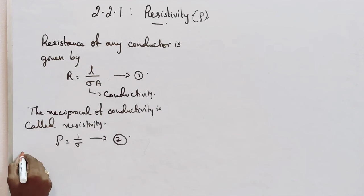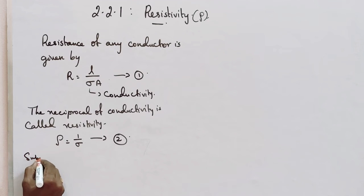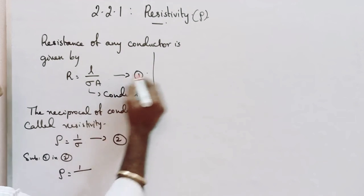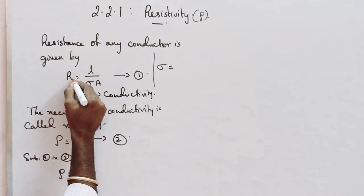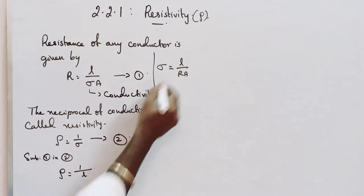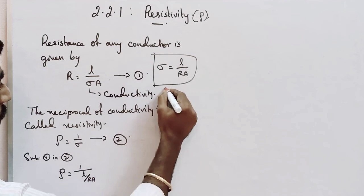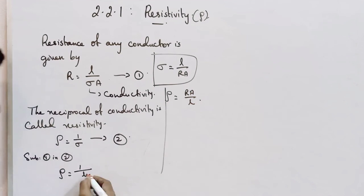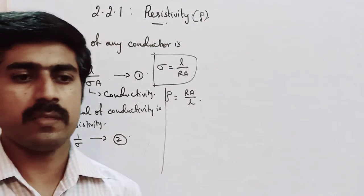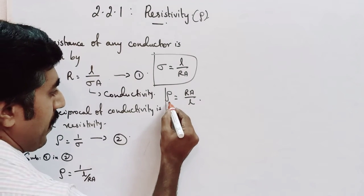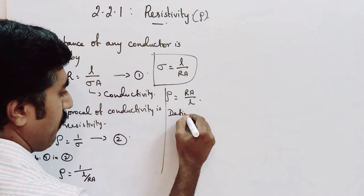From equation one, we can substitute into equation two. We know that sigma equals RA over L by cross multiplication. Substituting back, rho equals RA over L. This gives us the resistivity of a conductor in terms of resistance R, area A, and length L.